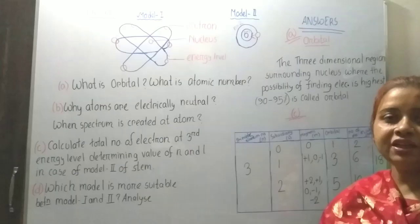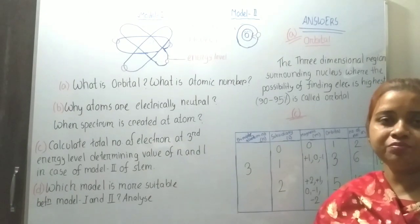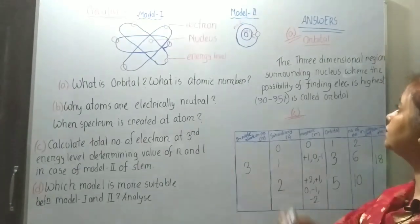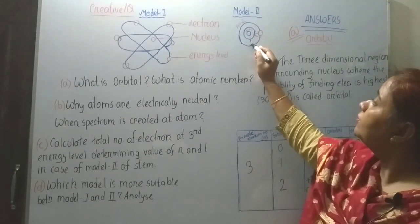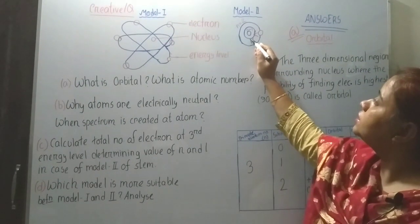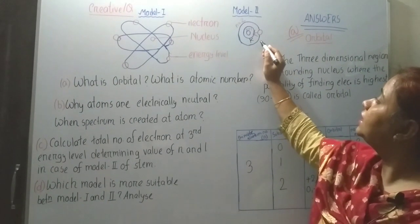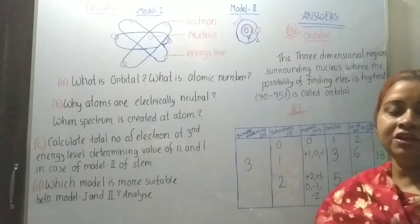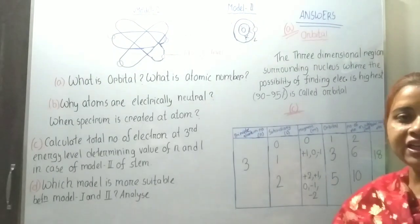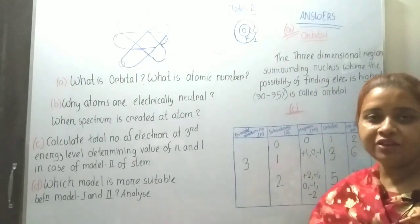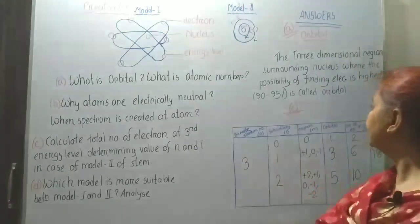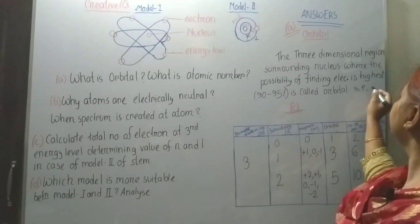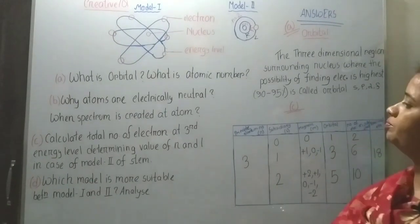Orbitals can be expressed by S, P, D, F. And orbits can be expressed by K, L, M, N. So orbits are expressed by K, L, M, N, and orbitals are expressed by S, P, D, F.